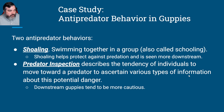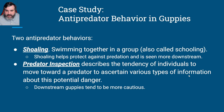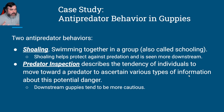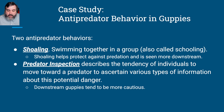The second behavior is predator inspection — the tendency of individuals to move toward a predator. Typically the downstream guppies, if they see a fish that could be a potential predator, they're going to hang back and wait. Whereas those in the low predation site are more likely to approach much more quickly and could potentially get eaten.